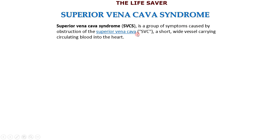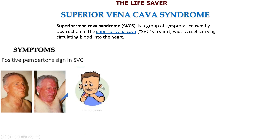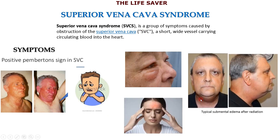In clinical care, SVC syndrome is basically a group of symptoms caused by obstruction of the Superior Vena Cava. The most important sign is the positive Pemberton's sign, where we ask the patient to lift their arms up so that their hands touch their face — if positive, there will be facial congestion or cyanosis. The patient will also have difficulty breathing, facial puffiness, headache, and edema of the neck referred to as the collar of Stokes.